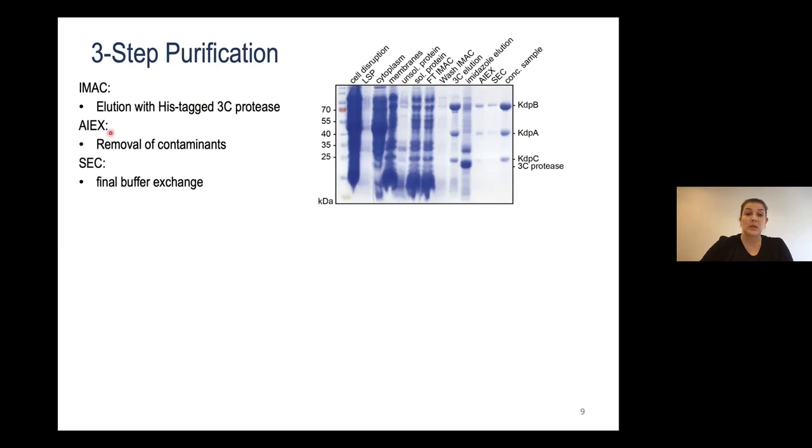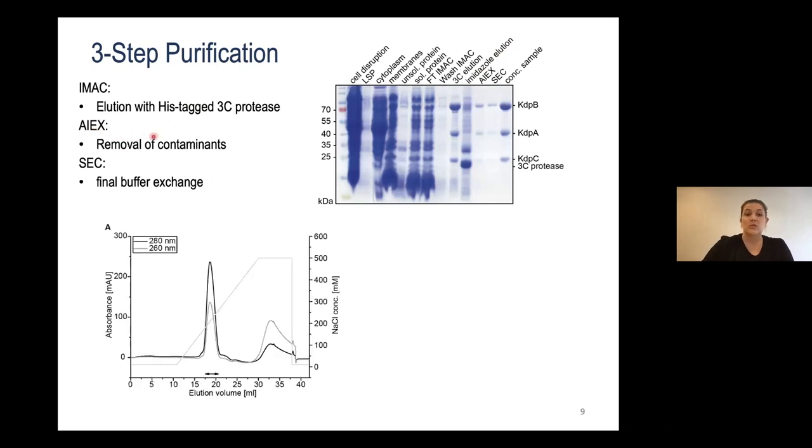The next step was an ion-exchange chromatography to remove additional contaminants. The isoelectric point of KDPF-ABC is around 7.5, so I decided to do that at pH 8 with an anion exchanger - positively charged resin, a Q-sepharose, for example. I eluted with a sodium chloride gradient between 10 and then 500 millimolar. As you can see, I nicely separate the protein, which is here, from all contaminants that are high in 260 absorbance that otherwise would be very hard to get rid of.